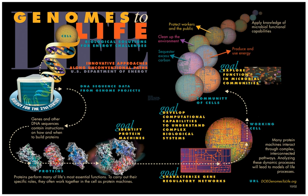One of the aims of systems biology is to model and discover emergent properties — properties of cells, tissues and organisms functioning as a system whose theoretical description is only possible using techniques of systems biology. These typically involve metabolic networks or cell signaling networks.